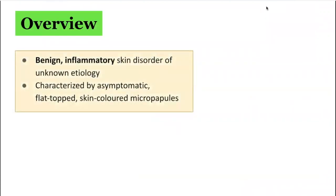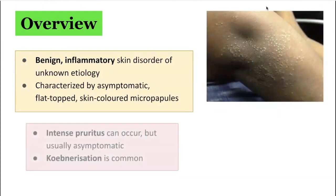Lichen nitidus is a benign inflammatory skin disorder. It's an uncommon chronic eruption consisting of multiple tiny discrete skin-coloured papules that are often arranged in large clusters. It is usually asymptomatic, however it can be itchy and pruritic. Koebnerization is common, whereby trauma to unaffected skin areas can cause the lichen nitidus lesions to form.